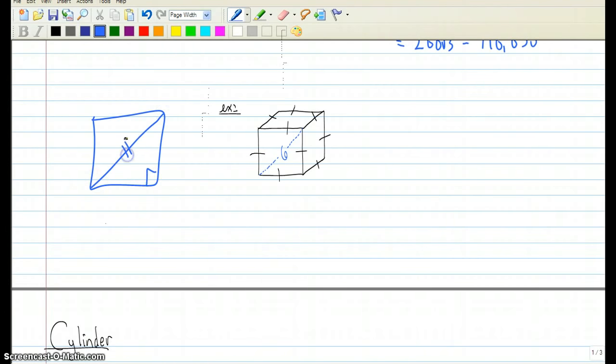since this length is 6, that means that the area of that square is going to be the diagonal squared divided by 2. So the area of this base is 18.